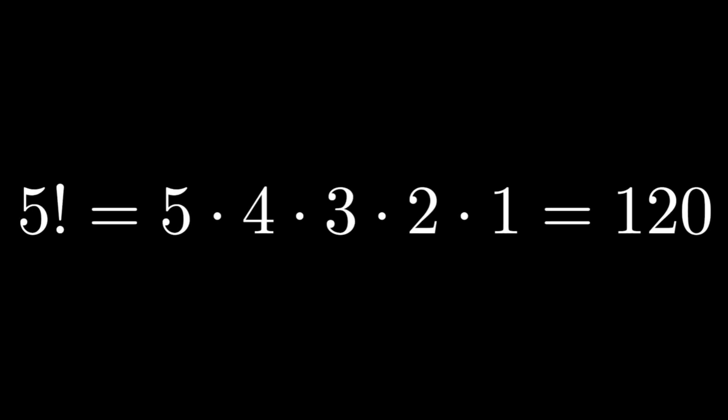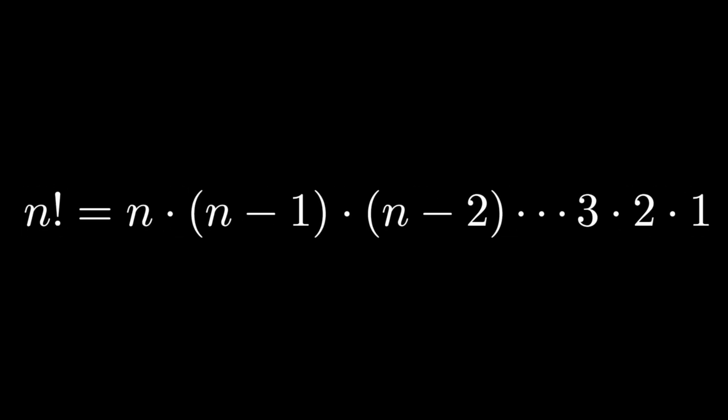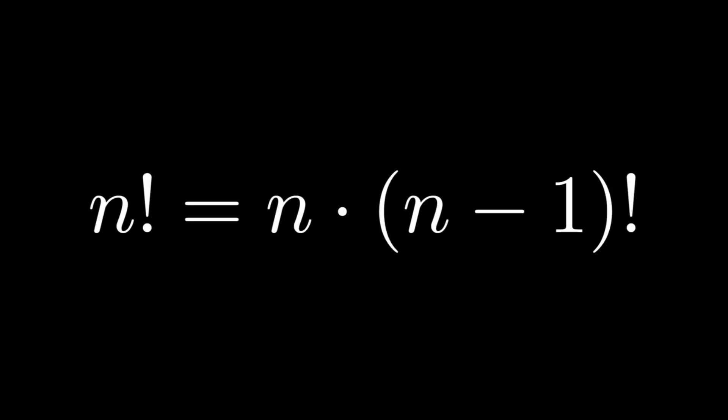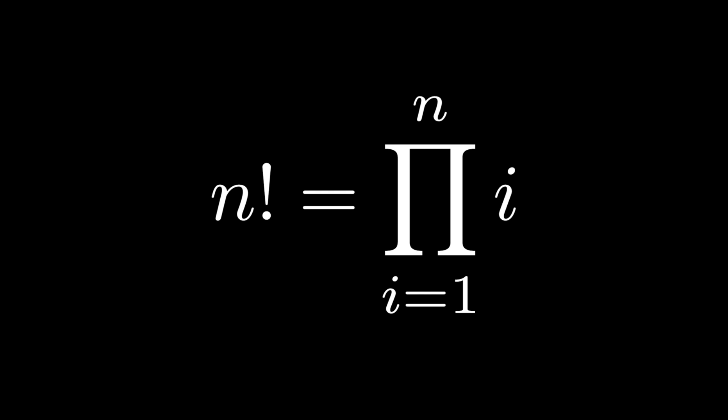The factorial of a number is the product of that number and all positive integers less than that number. It can be written like this, and like this, and like this. The factorial of 0 is 1. You might say, well that makes no sense at all, and indeed it doesn't at first glance because it is more or less just a convenient definition.